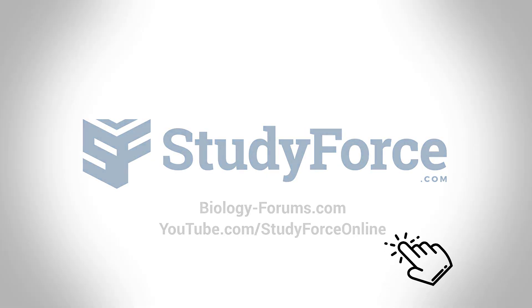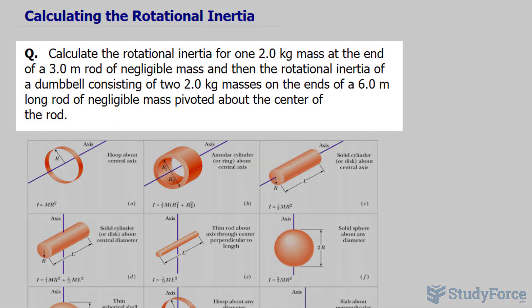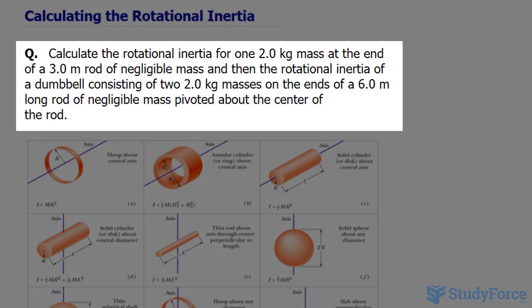In this tutorial, I'll show you how to calculate the rotational inertia. The question reads: calculate the rotational inertia for one 2-kilogram mass at the end of a 3.0-meter rod of negligible mass, and the rotational inertia of a dumbbell consisting of 2-kilogram masses on the ends of a 6-meter-long rod of negligible mass, pivoted about the center of the rod.